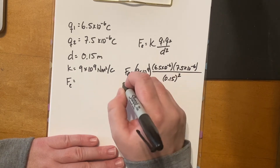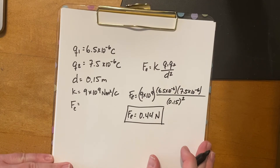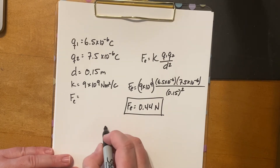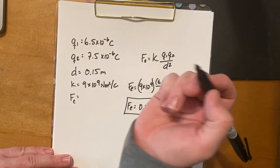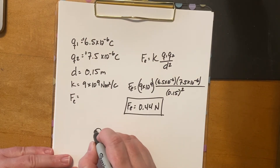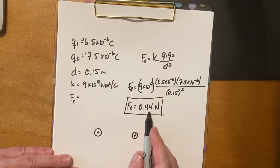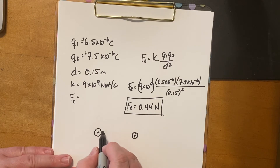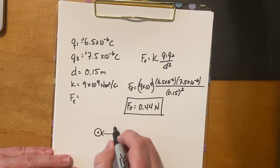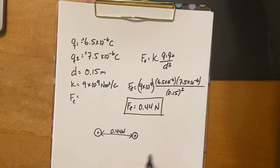The force due to the electric charge is 0.44 newtons. It's not a big force, but it's acting on a tiny particle. If we assume both charges are positive, you'd have one charge here and one there with 0.44 newtons of force pushing them apart. Since they're the same charge, if they were free to move they would shoot apart in opposite directions.